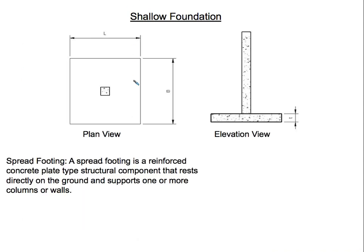Our first footing is a plain spread footing. A spread footing is a reinforced concrete plate-type structural component that rests directly on the ground and supports one or more columns or walls. I'm going to use an analogy — think about a sword. If you thrust something with a hundred-pound force, the area of the point of the sword is very small, so it's going to penetrate whatever you're impacting due to the fact that the area is small.